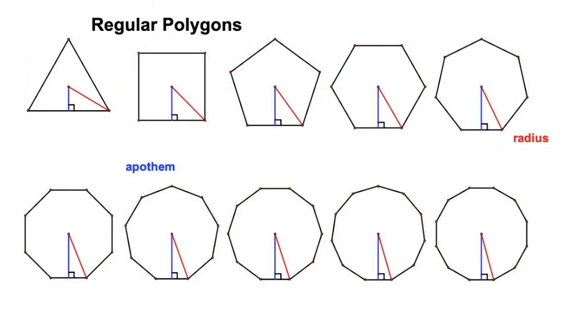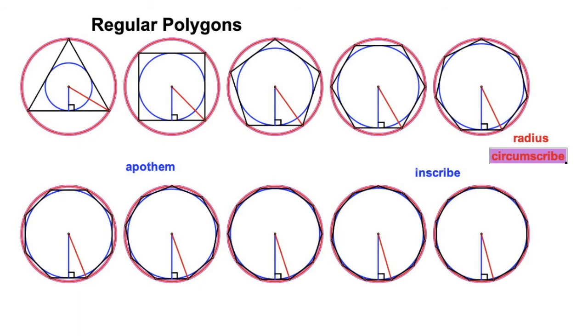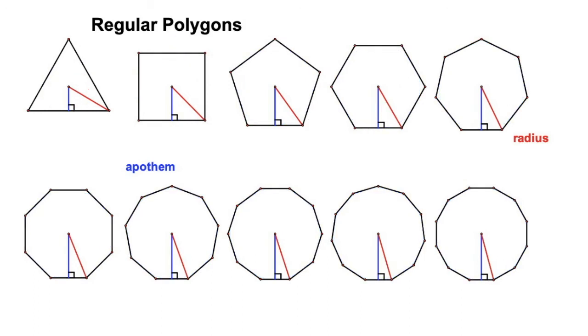Now, every regular polygon has an apothem, and that is a segment connected to the midpoint of any of the sides, and it's the radius of the inner circle. You could say that circle is inscribed inside the polygon. Yeah, that's pretty cool. So look at that. You've got circles on the outside and circles on the inside. Pretty neat.